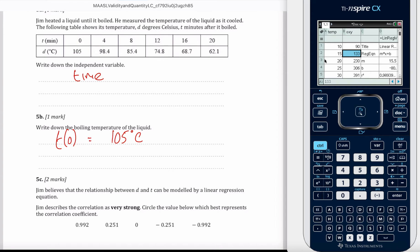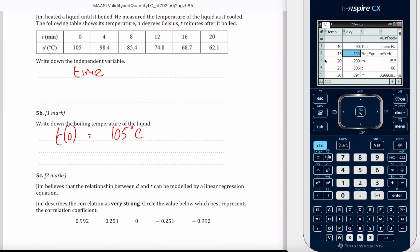Jim believes that the relationship between D and T can be modeled by a linear regression equation. Jim describes the correlation as very strong. Circle the value which best represents the correlation coefficient.